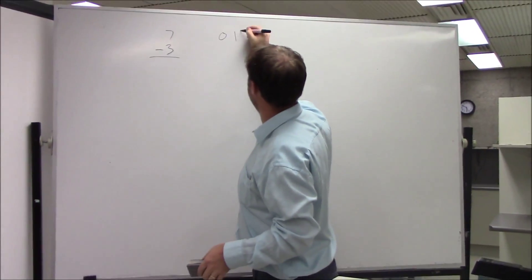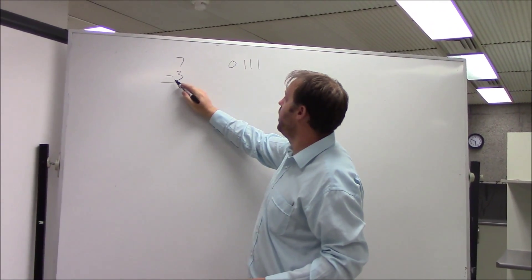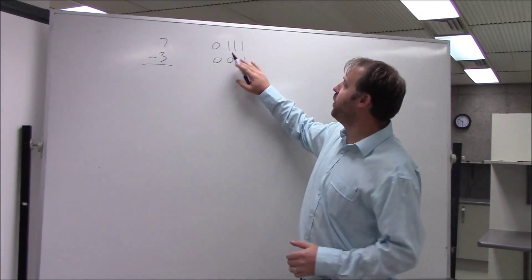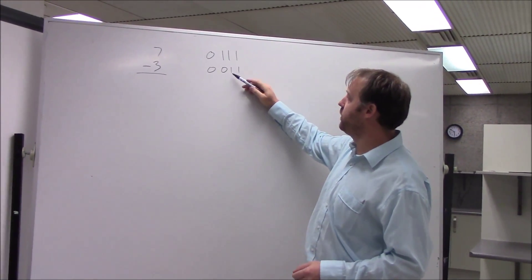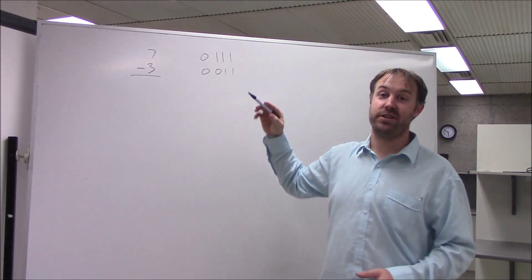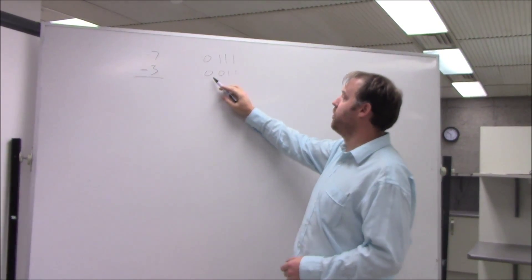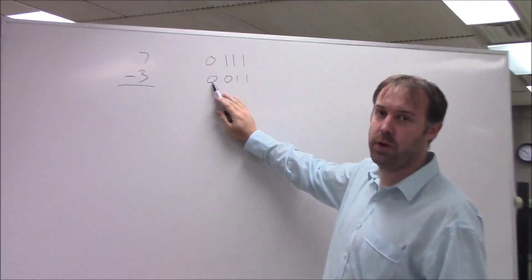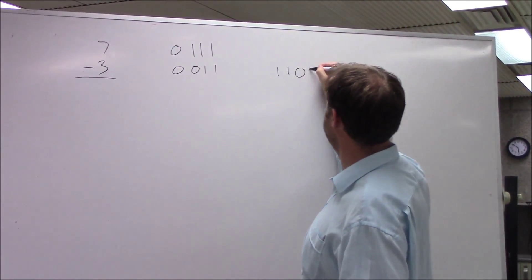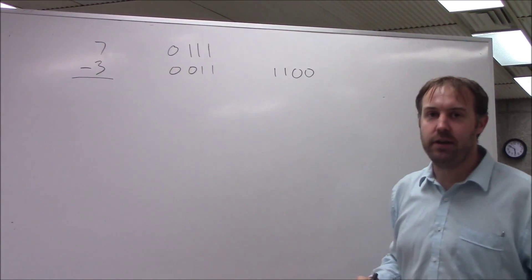So 0, 1, 1, 1, and 0, 0, 1, 1. So we've got our binary 7 and a binary 3. If I want to add the negative of this, what I do is I take the complement of it. So the complement is where if I've got a 0, I'll make it a 1. If I've got a 1, I'll make it a 0. So the complement of this is going to be 1, 1, 0, 0, but I'm not done yet.